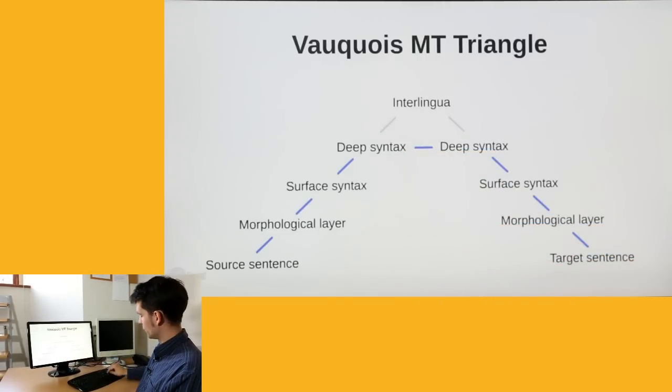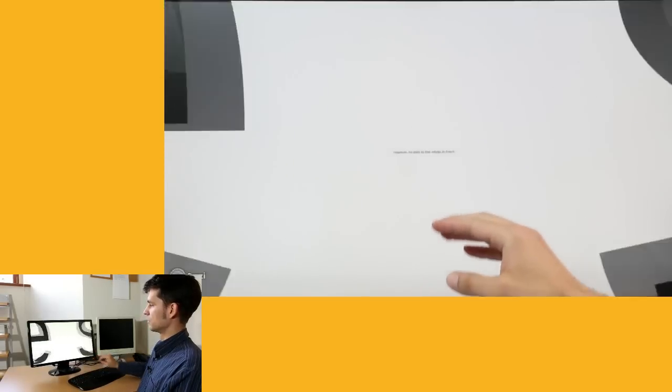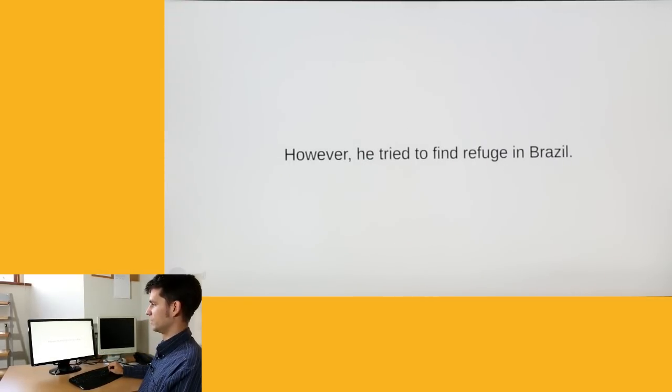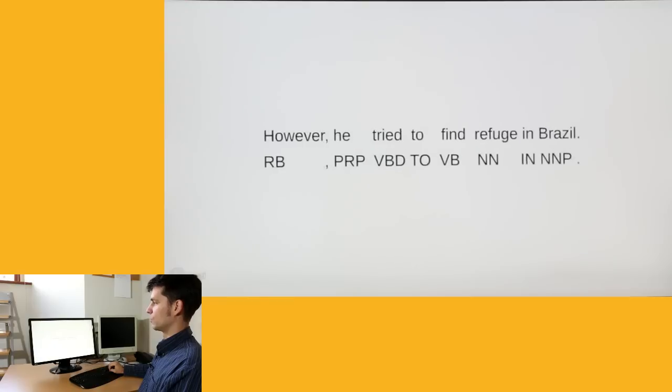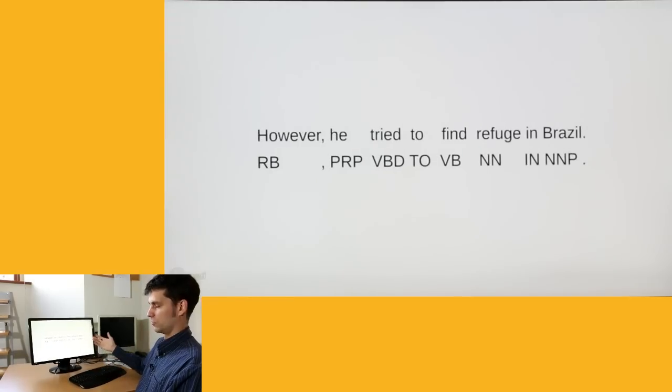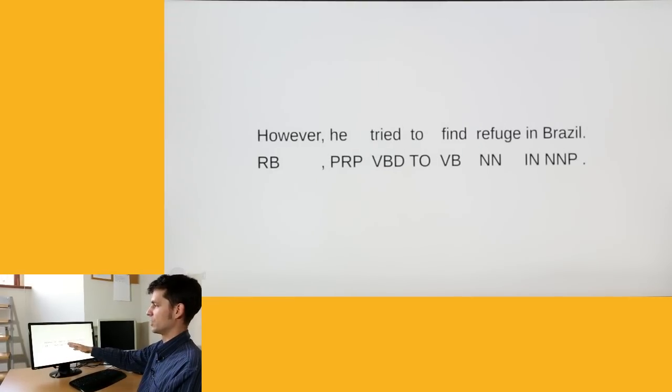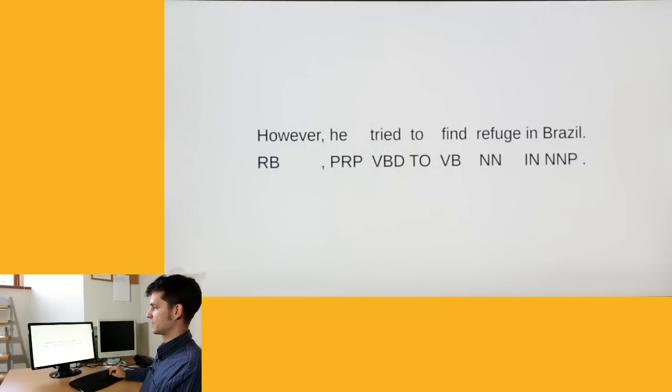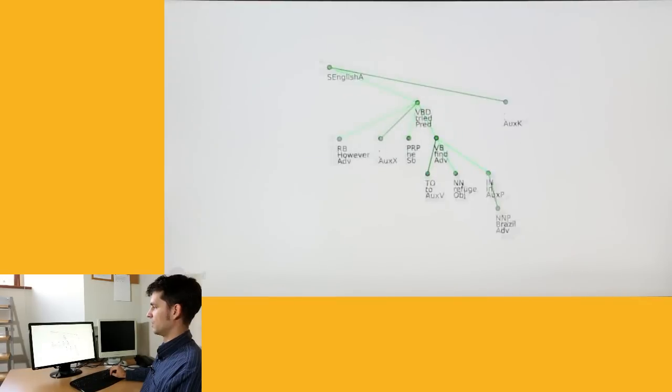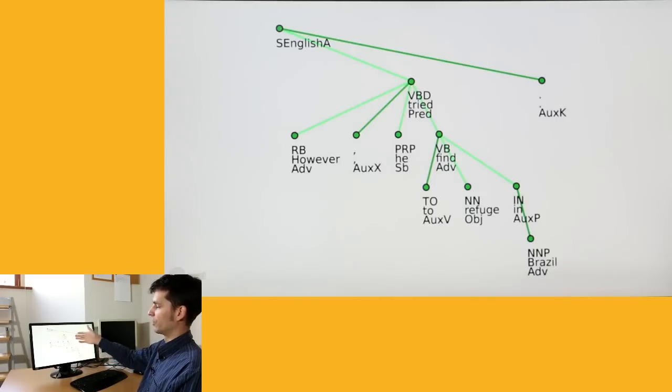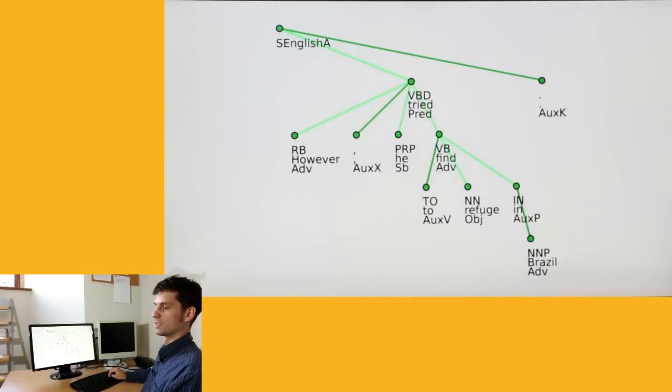So at the beginning, if we start with a source sentence, such as however he tried to find refugee in Brazil, we analyze it first word by word to get what is called morphologic level of analysis. Each word gets here at least the part of speech label. The next step in the processing is so-called syntactic layer, or surface syntax, where we now learn the relationships between the individual words in the sentence.